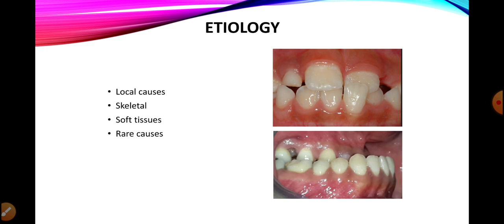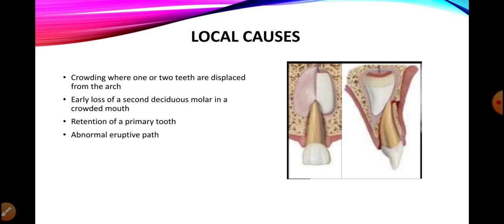We have now discussed normal occlusion, what a crossbite is, and the classification of crossbite. Now we will discuss the etiology of crossbite — what factors lead to its formation. There are a variety of factors acting either singly or in combination that can lead to the development of a crossbite. The major etiological factors are local causes, skeletal causes, soft tissue causes, and some rare causes.